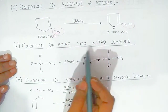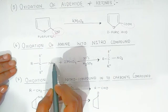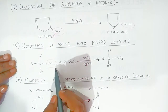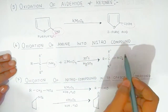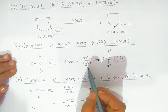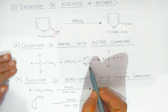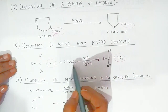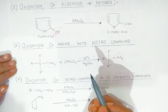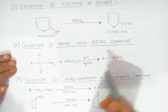Oxidation of amine into nitro compound. Here, amine is oxidized and converted into a nitro group in presence of manganese oxide as the oxidizing agent. So the amine is oxidized to a nitro compound.